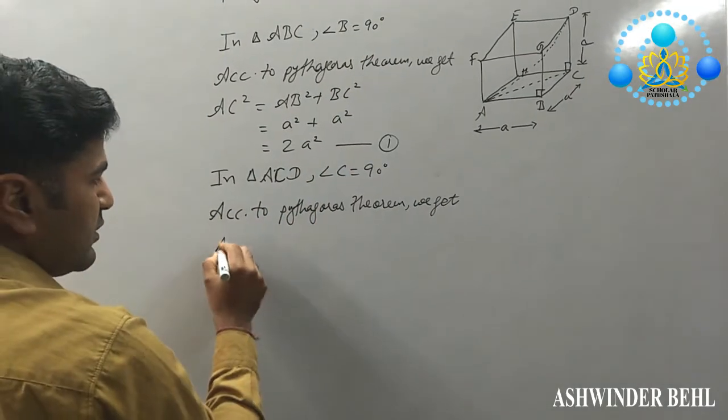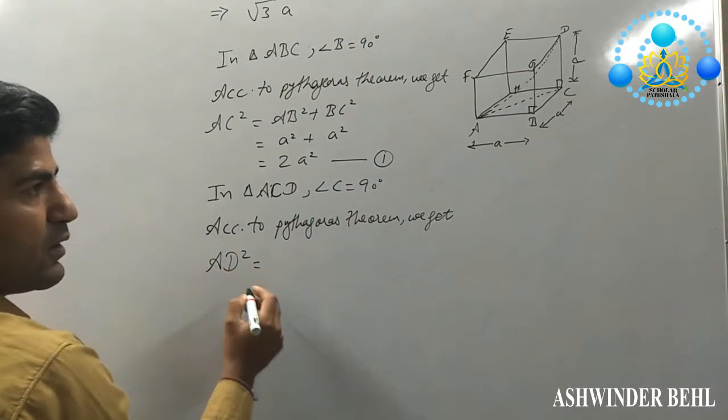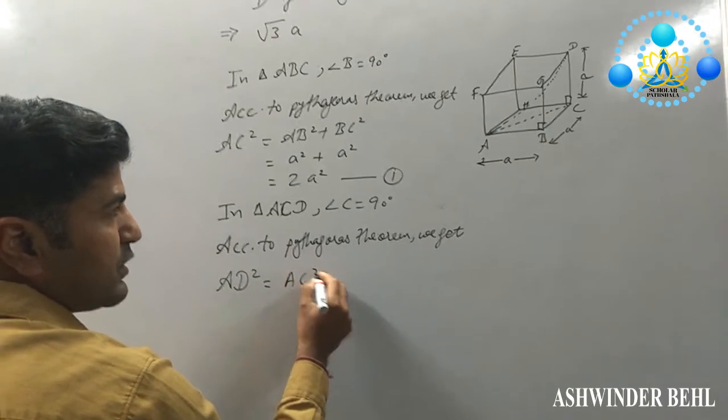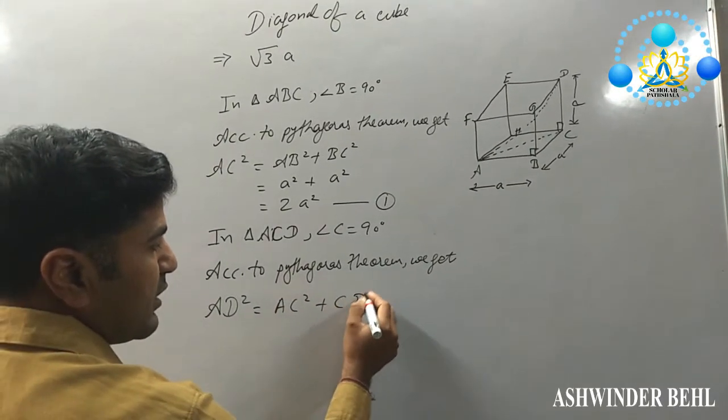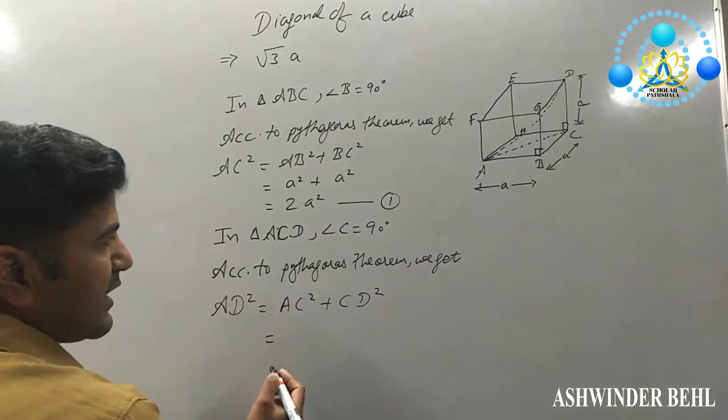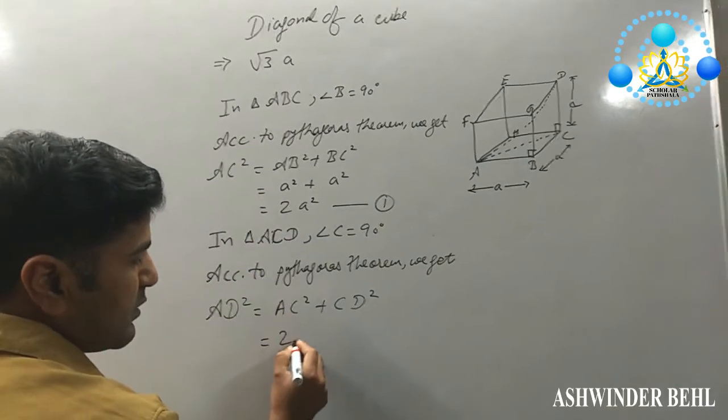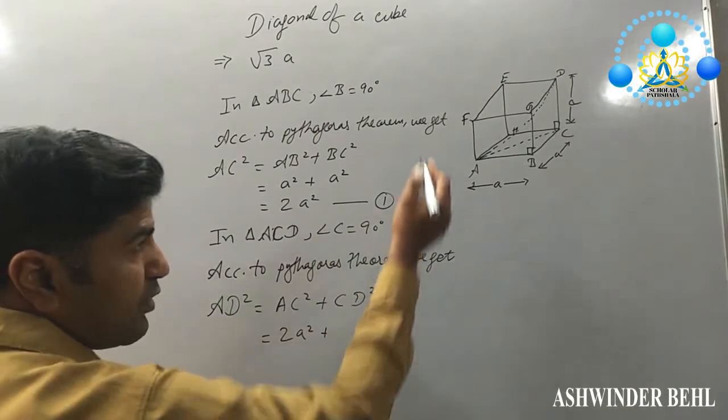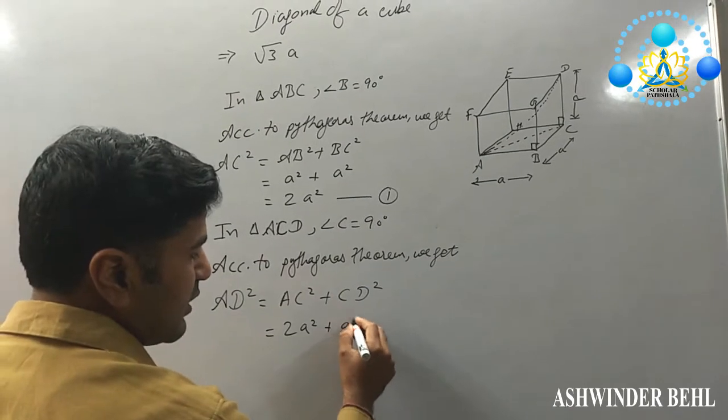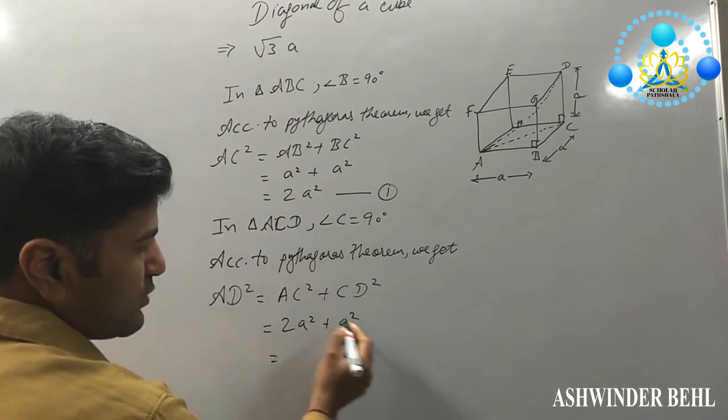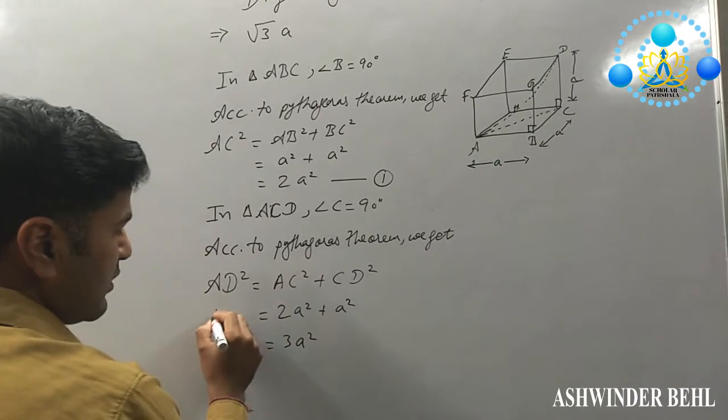AD square equals AC square plus CD square. So what is AC? AC is 2A square. And CD according to the figure, that is A square. So 2A square plus A square, that is 3A square.